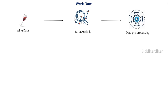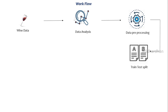Once we have analyzed our wine data set, we will pre-process the data — this step is called data pre-processing. We cannot feed raw data to our machine learning model, so we need to do some processing to make it compatible. After processing the data, there is another important step called train-test split, where we split our original data set into training data and test data. The training data is used to train the model, and the test data is used to evaluate how well our model is performing.